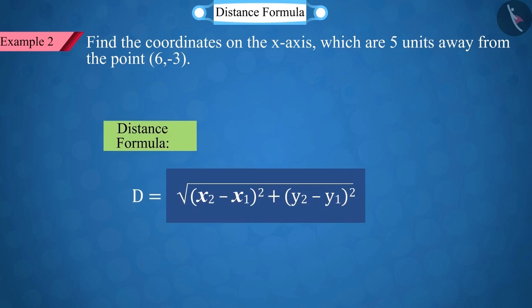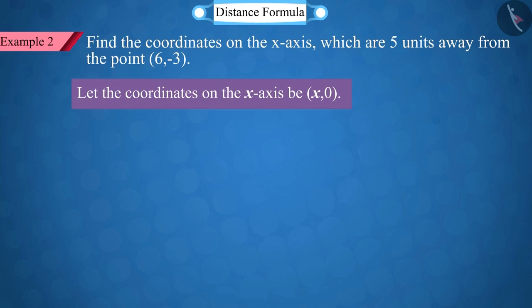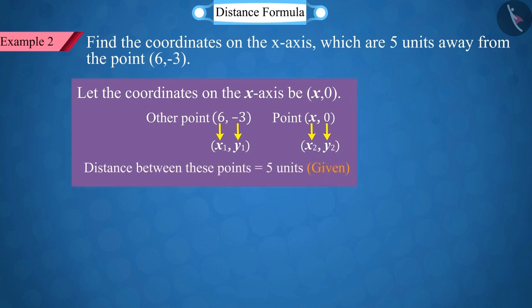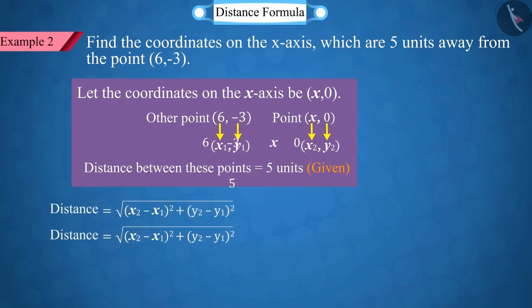For this, we will take the help of the distance formula. Let us first assume that the coordinates of the point on the x-axis are (x, 0). Here, we are given another coordinate point (6, -3), whose first point, 6, is represented by x1 and -3 by y1. Similarly, the point on the x-axis is represented by x2 and 0 by y2. Note that the distance value has already been given here. Putting all the values in the distance formula, an equation is found.